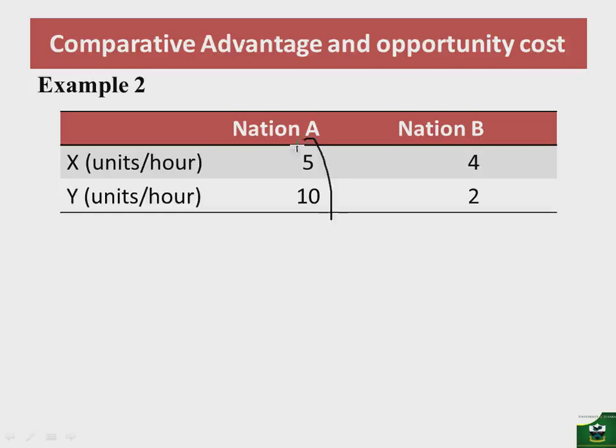And nation B has an absolute disadvantage in producing both commodity X and commodity Y. However, the levels of absolute disadvantage are different between the two nations in the production of X versus Y. As such, we need to find the opportunity cost of producing these commodities.